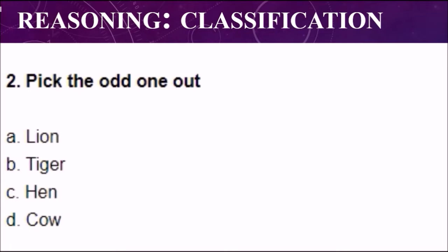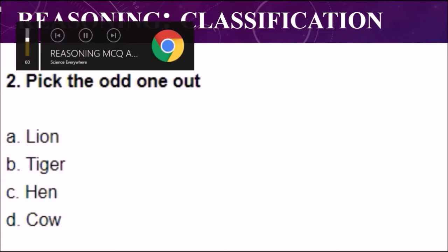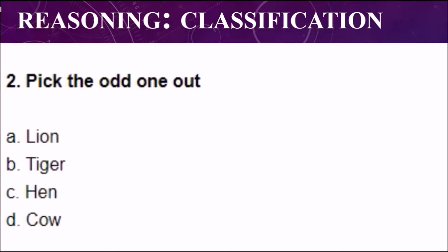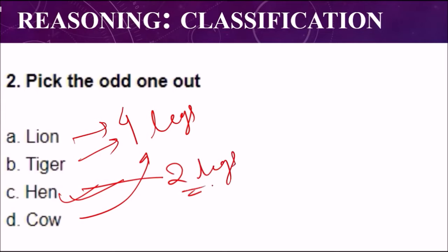This is your question number two: pick the odd one out. Again among these four options one is different. Tell me the answer. The correct option is C, that is hen, because lion, tiger, and cow all have four legs except hen. Hen has only two legs. Another way you can also say that hen is a bird.